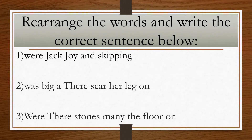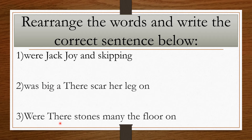Now here is an activity. Some words are given but they are jumbled up. You have to rearrange those words and form the correct sentence. First: 'War Jack Joy And Skipping.' Second: 'Was Big A There Scar Her Leg On.' Third: 'Were There Stones Many The Floor On.' Rearrange these words and write the correct sentences. Let's check the answers.